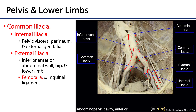The internal iliac arteries are amazingly variable. They serve the pelvic viscera and the perineum and external genitalia. The external iliac arteries head out underneath the inguinal ligament, which we can see here, where they become the femoral arteries. As such, the external iliac arteries are ultimately going to serve the inferior anterior abdominal wall, the hip, and the lower limb.